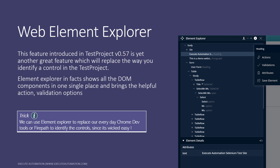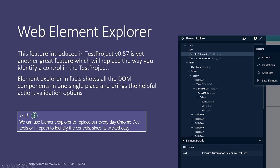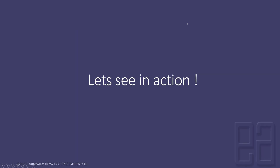There's one more hidden trick within this element explorer: you can download the whole DOM of a particular page, which you can use to identify controls. This is very easy — even if you're not going to use Test Project for your application automation, you can still use it just to download the DOM and see how the structure looks. All these things are pretty cool and available right within Test Project. Let's quickly see everything in action.